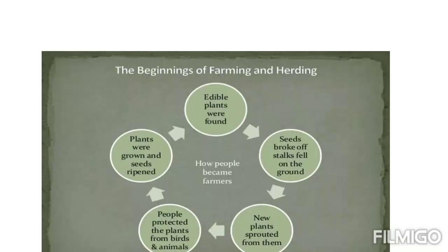How did early humans become farmers and herders? When people about 5,000–10,000 years ago observed the natural processes of plant growth — seeds falling from fruits and sprouting into more plants — they started collecting seeds and protecting them from animals and birds. This is how they became farmers. They also started keeping and rearing animals such as dogs, sheep, goats, and pigs. This is known as herding.